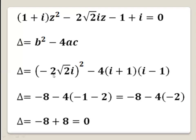Solving this equation, we first find the discriminant delta equals b squared minus 4ac. Squaring b gives 8 times i squared, which is minus 1, so minus 8. For 4ac, we use the form (a plus b)(a minus b) equals a squared minus b squared, where a squared equals i squared equals minus 1, and b squared equals minus 1, giving minus 4 times minus 2 equals 8. So delta equals minus 8 plus 8, which is 0.